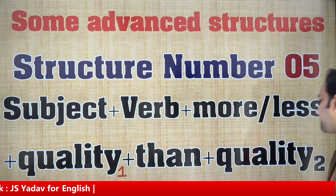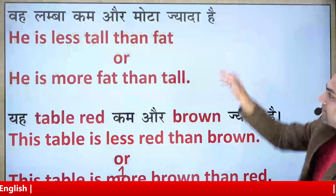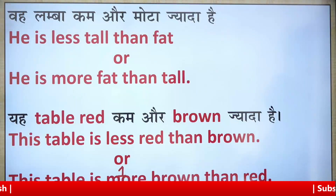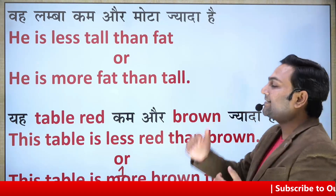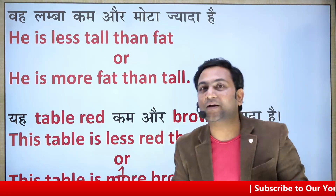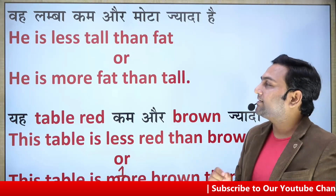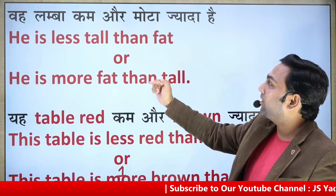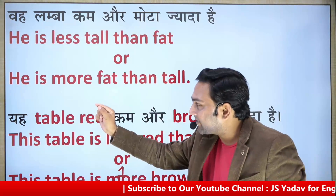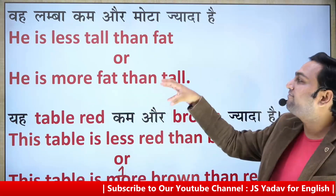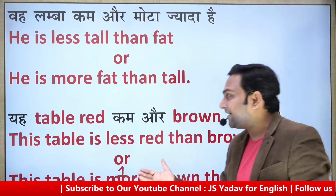I've got some examples for you. Look at the board now. The first example: this sentence can be spoken in two ways. The first way says: 'He is less tall than fat,' or 'He is more fat than tall.'